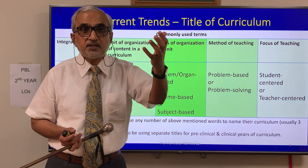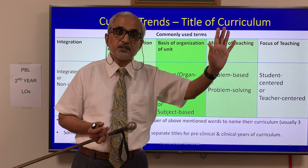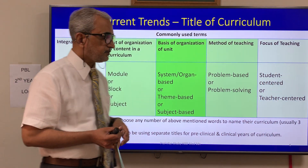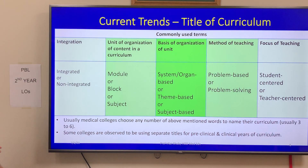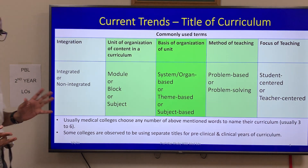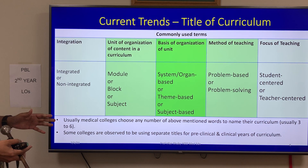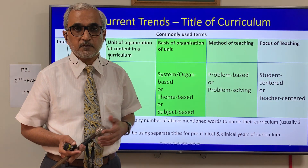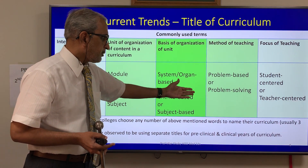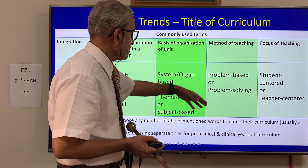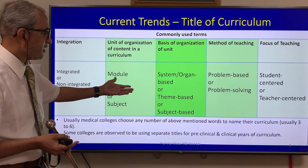Competency-based means you have first defined the competencies you want the student to achieve and then developed the curriculum. Outcome-based means you first defined the outcomes and then developed the curriculum. Once you define the competencies, outcomes are derived from those competencies. Medical colleges typically choose any combination of three, four, or five of these descriptors to name their curriculum. Some colleges even use separate titles for pre-clinical and clinical years, so a curriculum could be described as integrated, modular, system/organ-based, problem-solving or problem-based, student-centered or teacher-centered, or non-integrated, isolated, subject-based, theme-based, and so on.